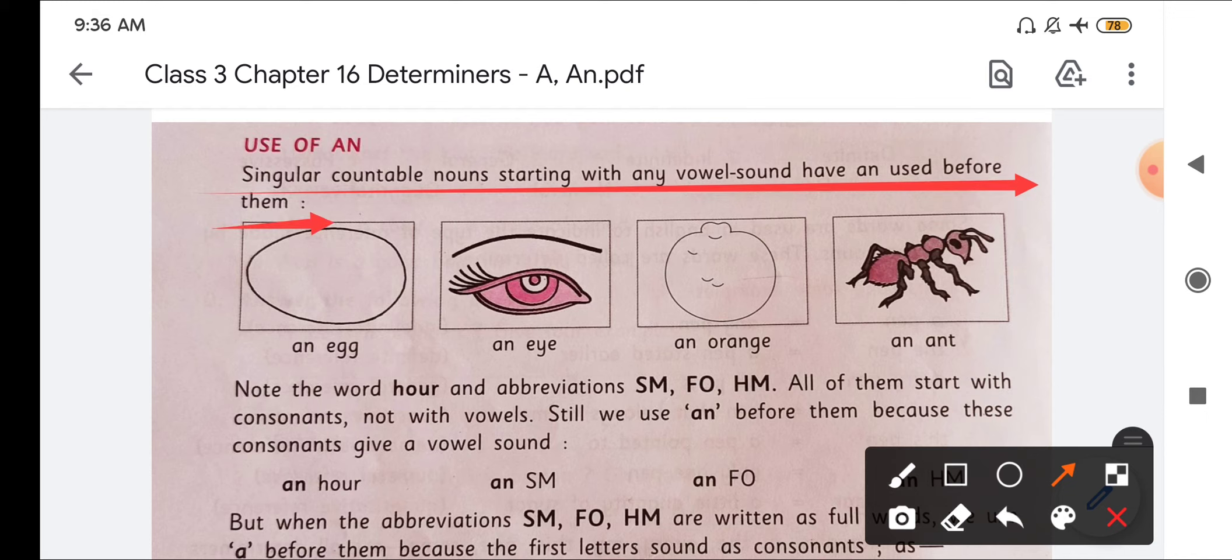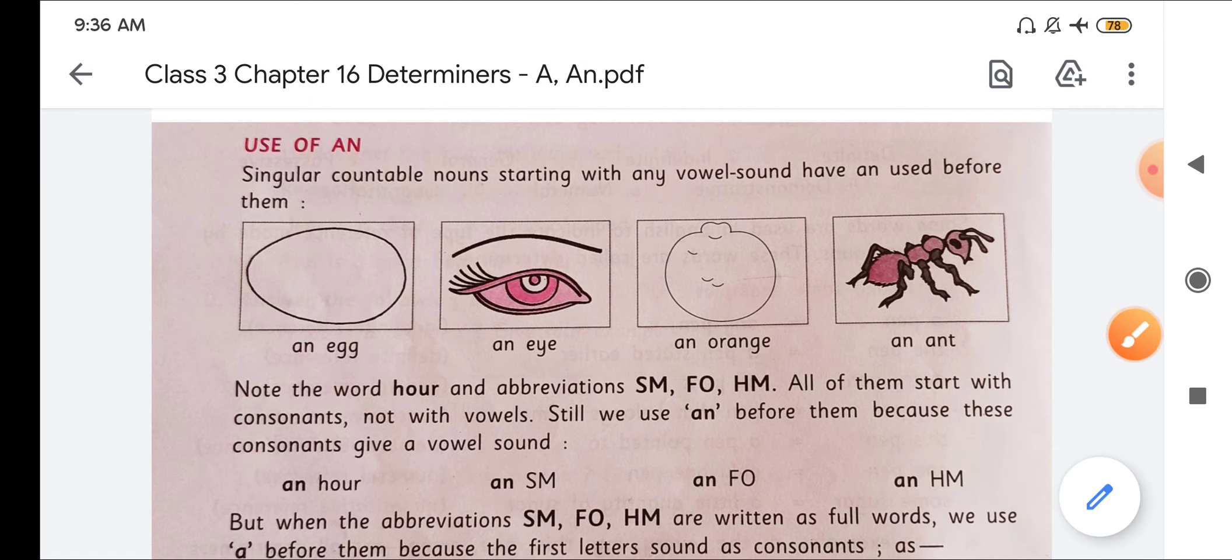Now where we use an. See here, singular countable nouns starting with any vowel sound have an used before them. So single countable means when we talk about a single thing, in front of that we use an. For example, an egg, an eye, an orange, an ant.